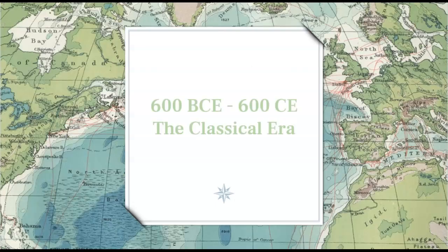The Classical Era covers approximately 600 BCE to 600 CE. This is a time period where societies are becoming increasingly complex in all of the pieces of society. Honestly, I could teach a year-long course on just this time period, but because we're trying to build some historical context for you, I'm going to try to stick to just the highlights of each civilization. Wish me luck.